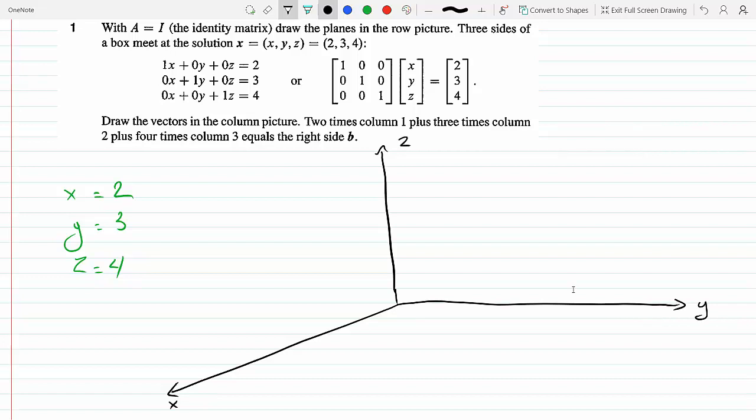The first one representing x equals 2 is a vertical plane parallel to the zy plane. So this is x equals 2. The second one, y equals 3, goes 3 in the y direction. This is again a vertical plane parallel to the zx plane.